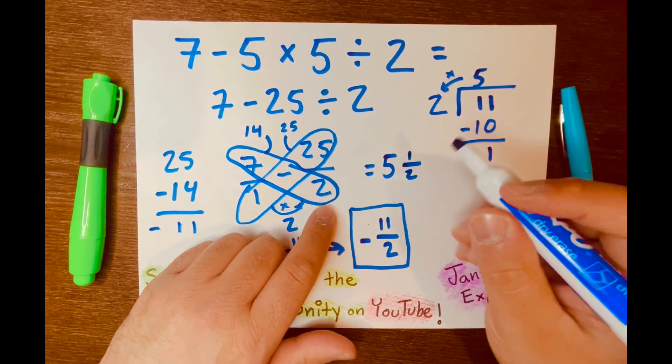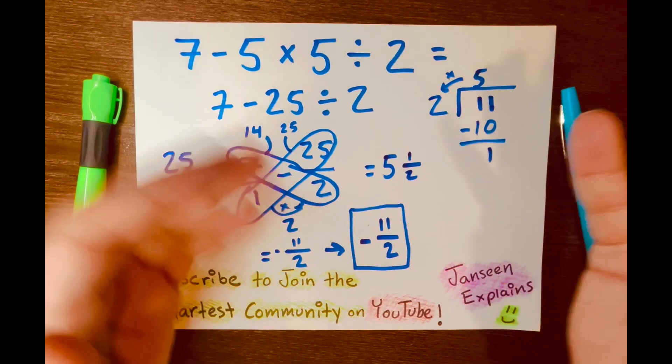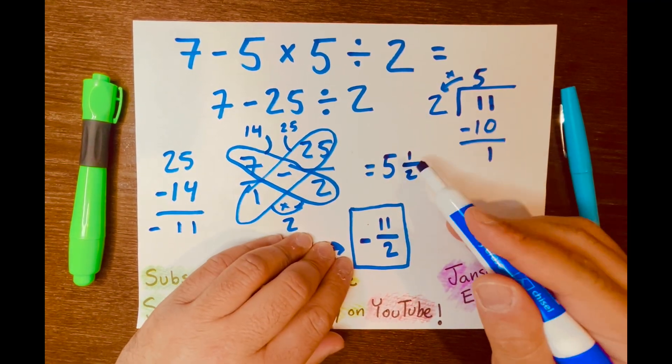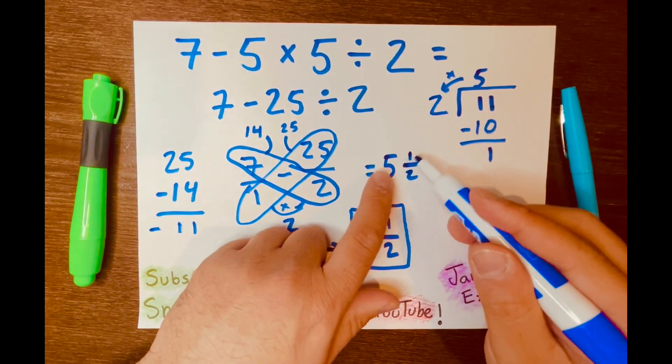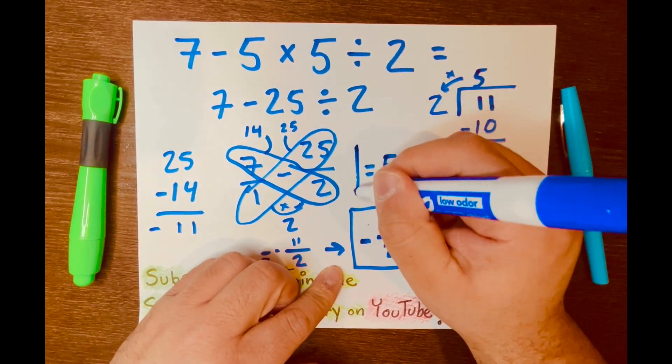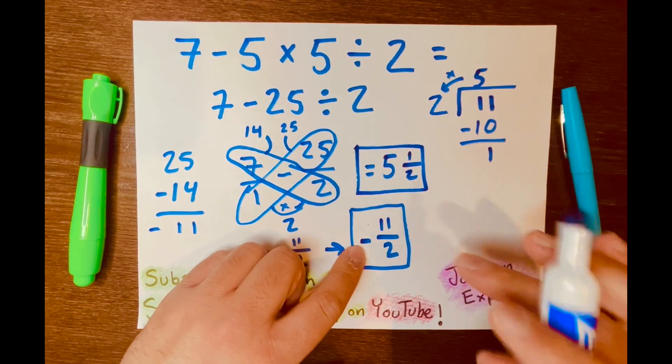Or 1 over 2, or half. 5 half. 5 and 1 half, or however you want to call it. 5 and 1 over 2. And let me box that up for you. That's the second answer.